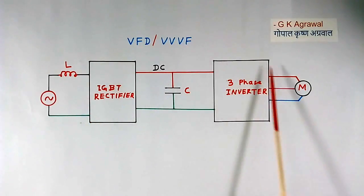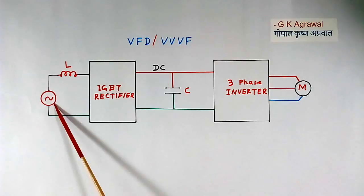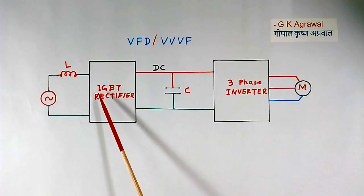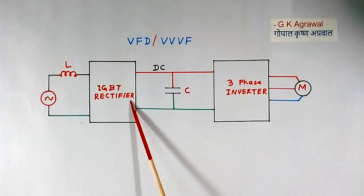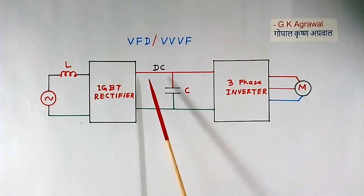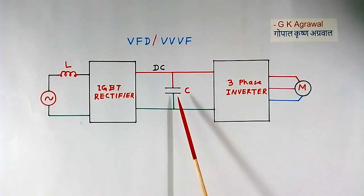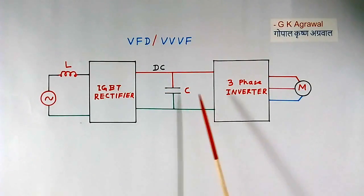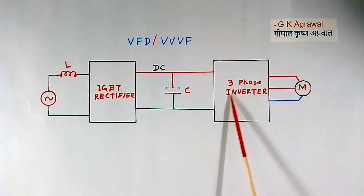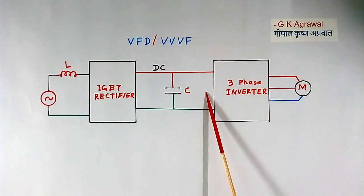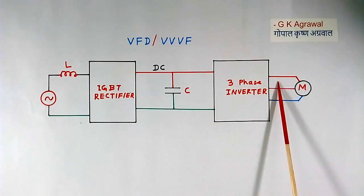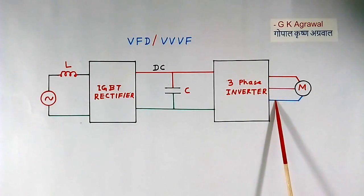This is the block diagram of VFD. This is single phase AC input. This is an inductor. This is the IGBT-based rectifier which converts AC into DC. This is the DC link capacitor. And this is the IGBT-based 3-phase inverter which converts DC into 3-phase output, where both voltage and frequency are controlled.